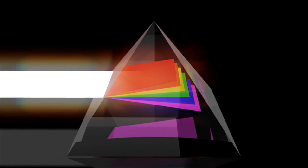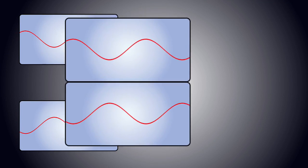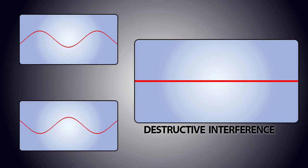Light travels in waves. Sometimes, two or more waves join together. Destructive interference is when two or more waves come together and cancel each other out to make a weaker wave.